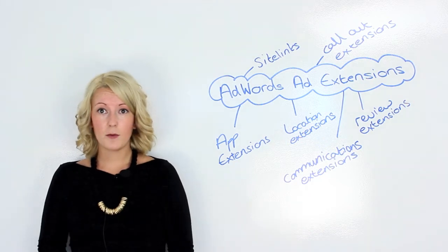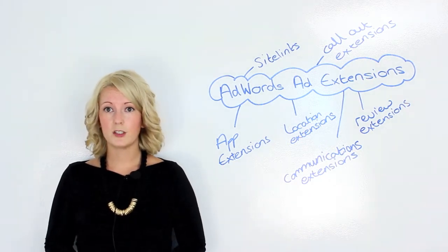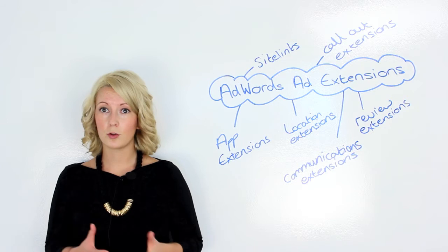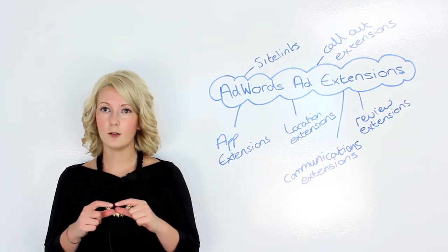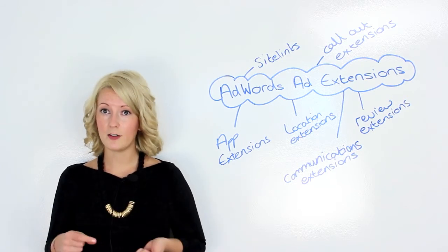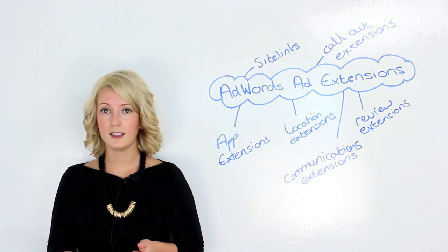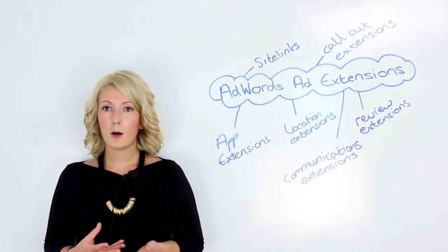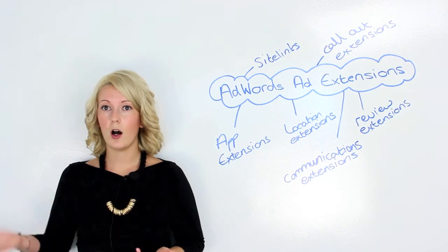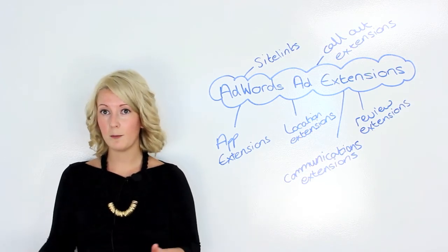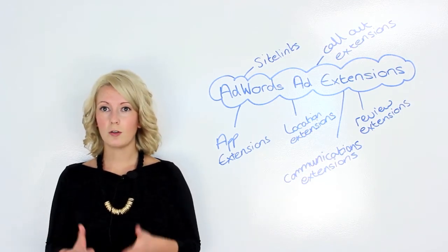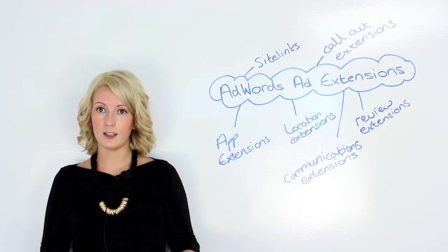Communications extensions are something that the big travel brands do really well. So if you Google Thompson or Thomas Cook, you often see that there's a little box underneath where you can put your email address and subscribe to email alerts. Now they work really well because you can integrate your search campaigns with your other marketing activities, so with your email marketing, you can just grow your database through your AdWords ads.